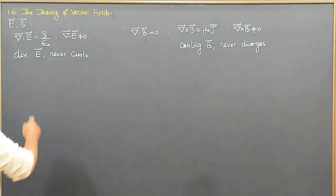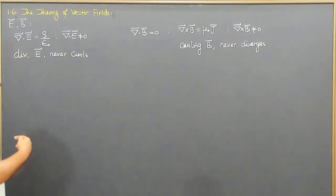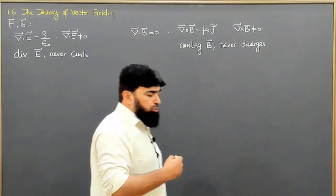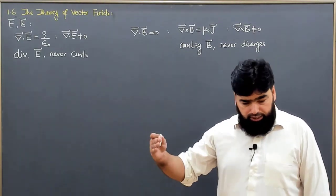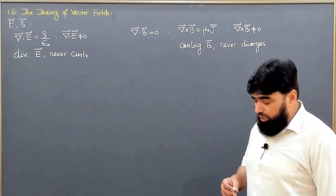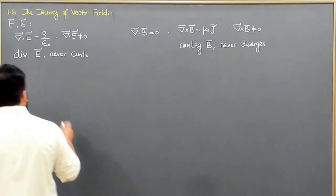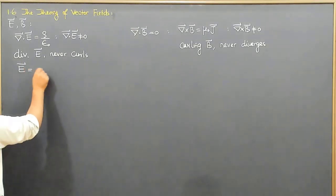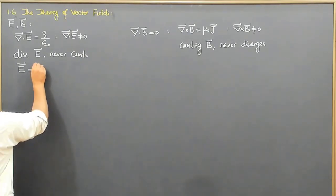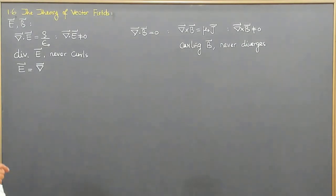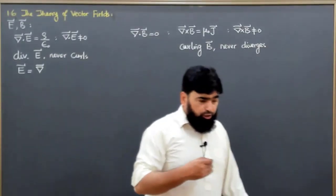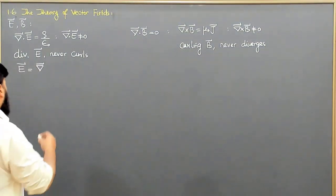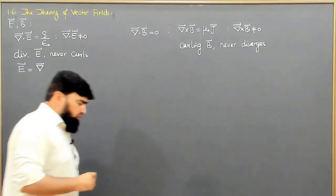So we have a diverging electric field which will never curl, and a magnetic field which is curling and will never diverge. This means the electric field is the result of something — it is generated due to something varying in a straight line, it never curls. That result is the gradient, because gradient is a directional derivative — a derivative in a certain direction.